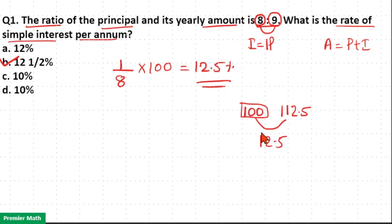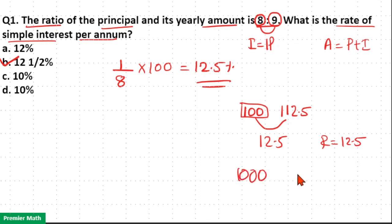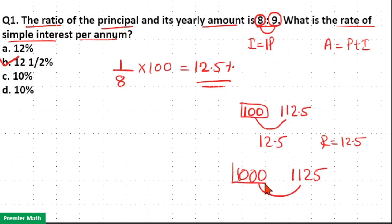So the rate is equal to 12.5 percent. Another example: if I invest 1000 rupees in a bank, after 1 year I got 1125 rupees. Now the difference between the amount received after 1 year and the amount invested initially is equal to 125 rupees.